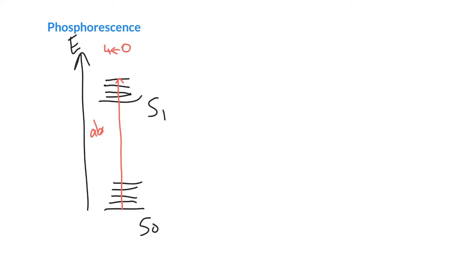And then what happens here is you get internal conversion. So the molecule basically just dumps that energy out in a non-radiative fashion. That's internal conversion. And probably that energy just ends up being picked up by solvent molecules around. And so at this point here, the molecule could go ahead and return down to the ground state and that would be called fluorescence.